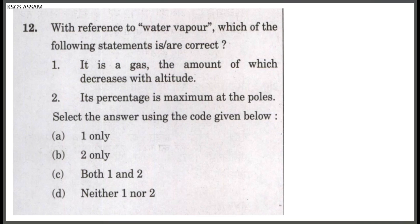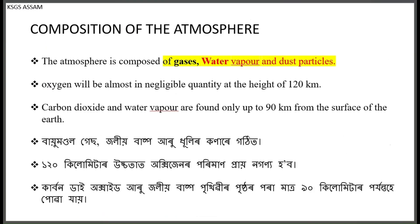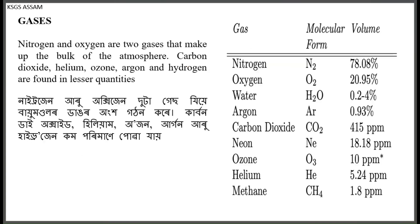Question 2: if you want to know our atmosphere, what does it mainly consist of? Gases, water vapour and dust particles. The gases include nitrogen, oxygen, argon, carbon dioxide, neon, ozone, helium. These are the gases of the atmosphere.